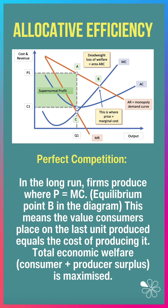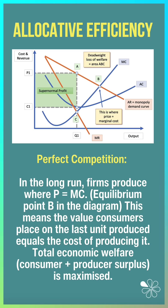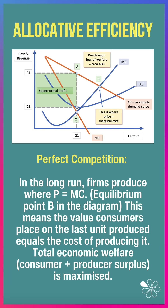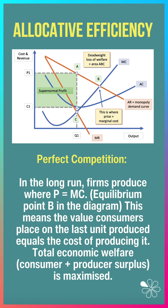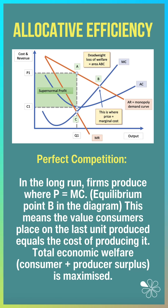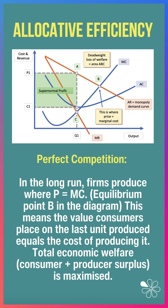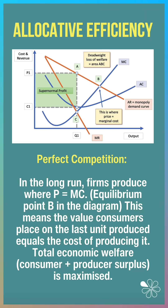With perfect competition, in the long run, firms produce where price equals marginal cost — that's point B in this diagram. This means the value consumers place on the last unit produced equals the cost of supplying it. In this situation, total economic welfare, which is the combination of consumer and producer surplus, is maximised.